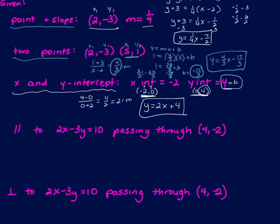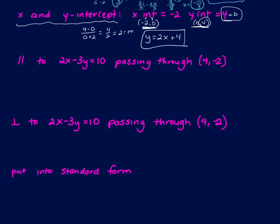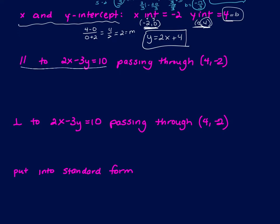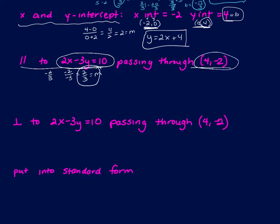Now we're working through examples where you're given parallel and perpendicular lines. If a line is parallel to a given line in standard form and passes through a point, I only need the slope from that line. Using the shortcut, negative a over b: for 2x minus 3y equals something, the slope is negative 2 over negative 3, which is 2/3. That's m. Plugging the point into point-slope: y plus 2 equals 2/3 times (x minus 4), giving 2/3 x minus 14/3 after distributing and subtracting.